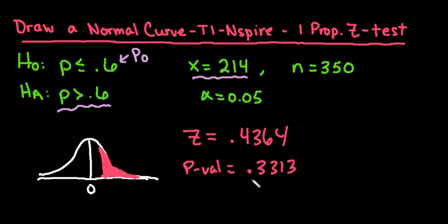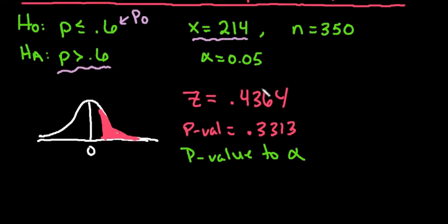All right, so now you can make your decision. Remember to make your decision, you're going to compare p-value to alpha. In this case, since our alpha is 0.05, we can see very clearly that 0.3313, or 33%, is greater than our alpha of 5%. So we can say that we failed to reject the null hypothesis.